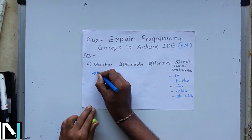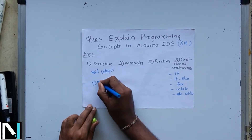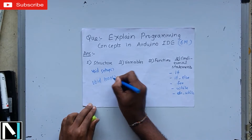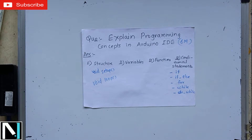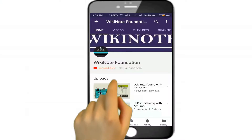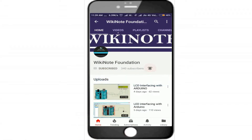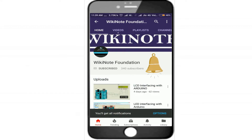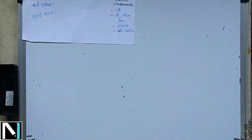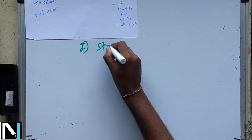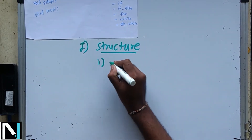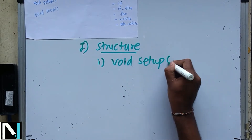The structure gets divided into two parts: void setup and void loop. I will add this part now. I am going to explain each and every concept in detail and how to represent this in the exam paper. Please do subscribe to the YouTube channel Wiki Note Foundation and click the bell icon to receive notifications of new uploaded videos. Firstly, the structure is divided into two parts: void setup and void loop.